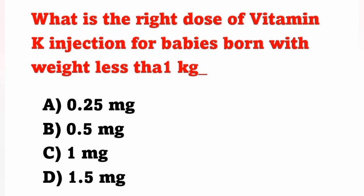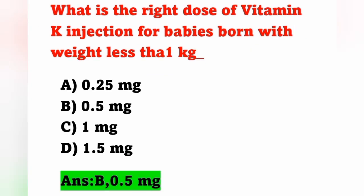Next question: What is the correct dose of Vitamin K injection for babies born with weight less than 1 kg? Options: A) 0.25 mg, B) 0.5 mg, C) 1 mg, D) 1.5 mg. For babies weighing less than 1 kg, the correct dose of Vitamin K is 0.5 mg. Option B is the correct answer.